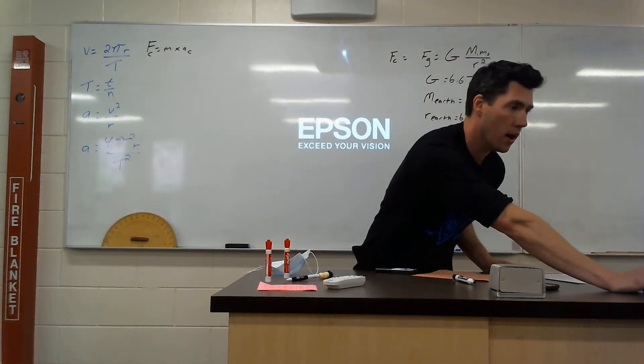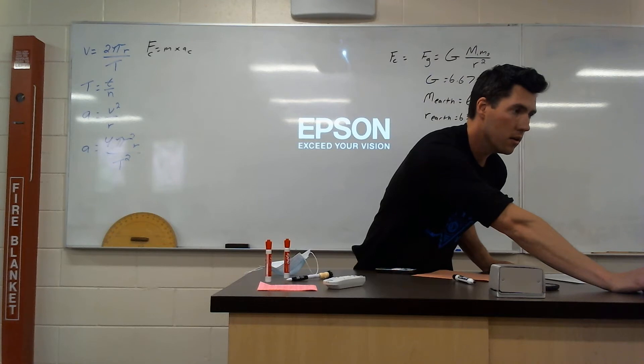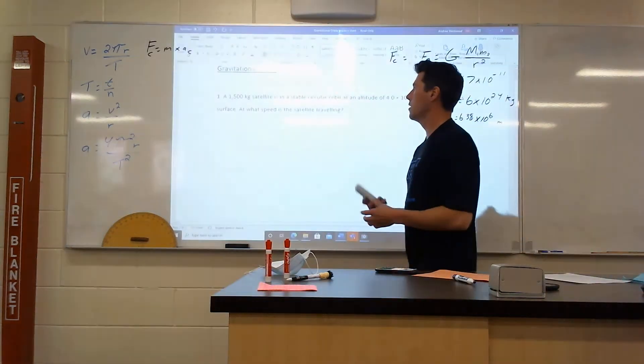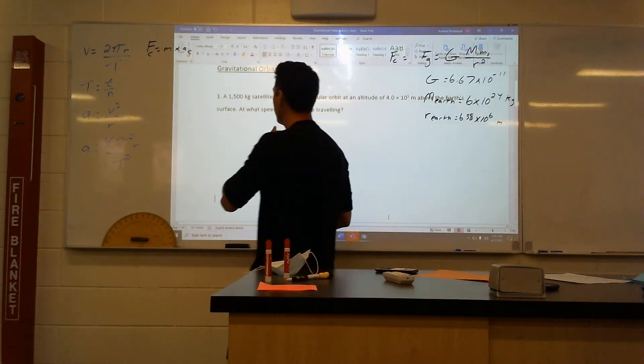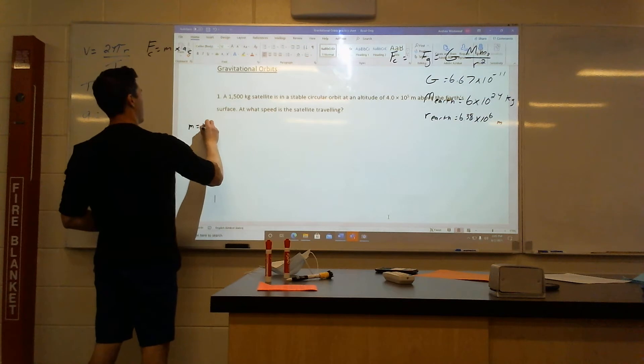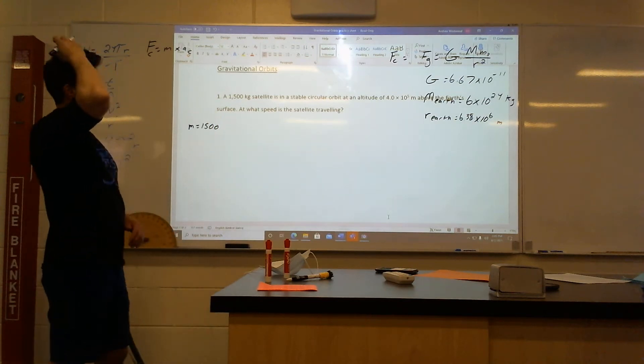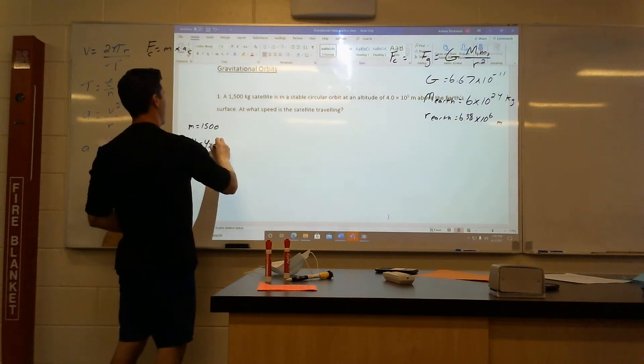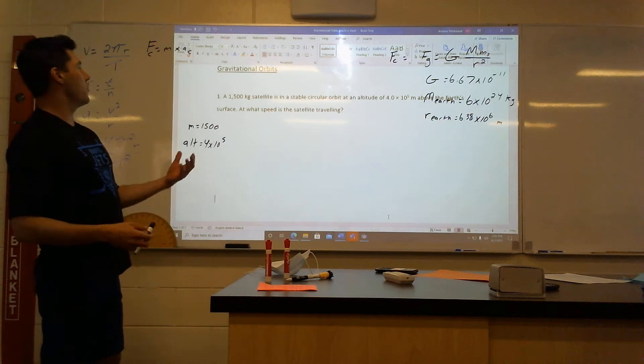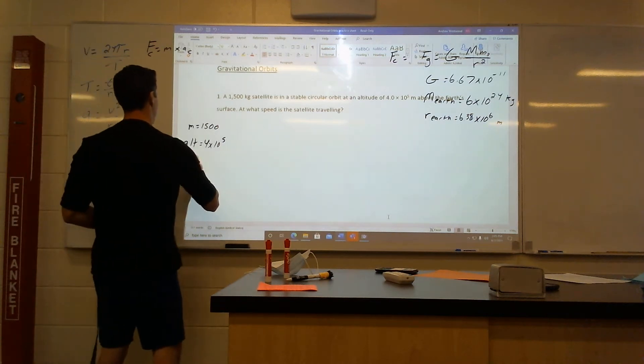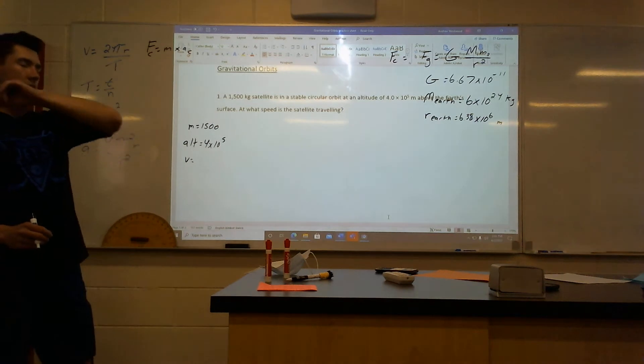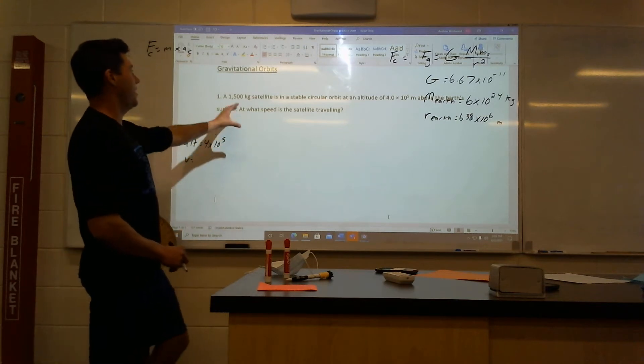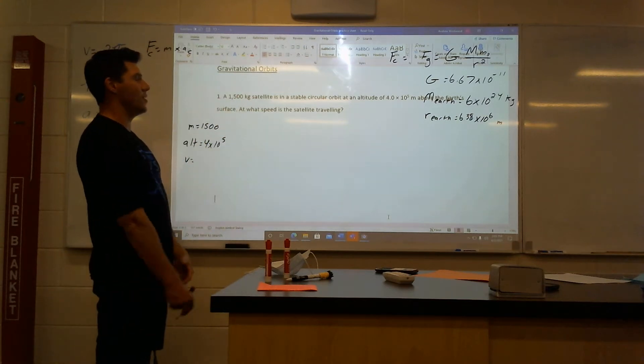Like how fast is a satellite orbiting Earth? How can we figure that out just by the radius and the mass of the actual object? So let's get through that. Let's go to question one of the new worksheet, the orbit worksheet. So here's question one. A 1500 kilogram satellite is in stable orbit at an altitude, not radius, an altitude of 4 times 10 to the 5 meters above the Earth's surface. At what speed is it traveling? So I need a velocity. This question seems easy. It's a very small sentence and it looks like it's easy. This is a hard question.